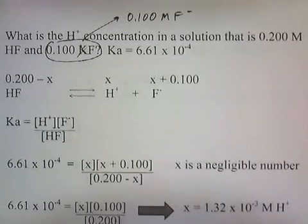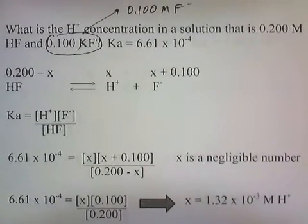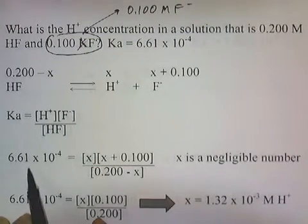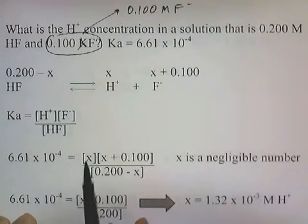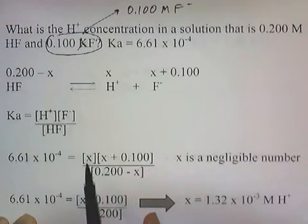We're going to use our trick again where we say that this is a very, very small number. So that must mean that x is also a small number. This can only be a small number if x is a small number.